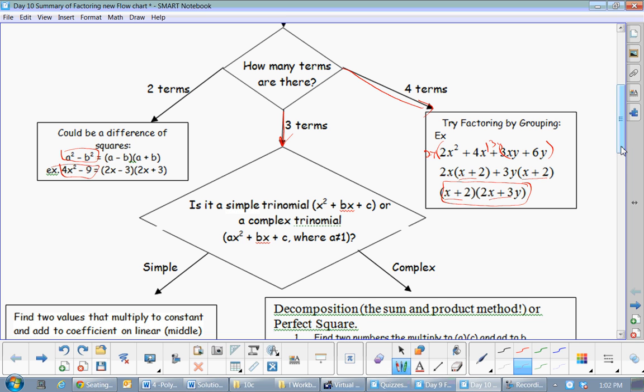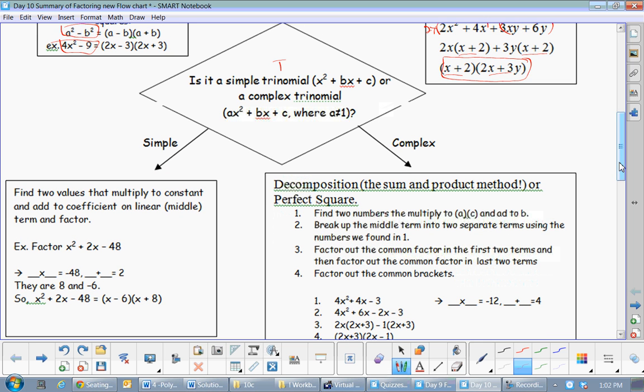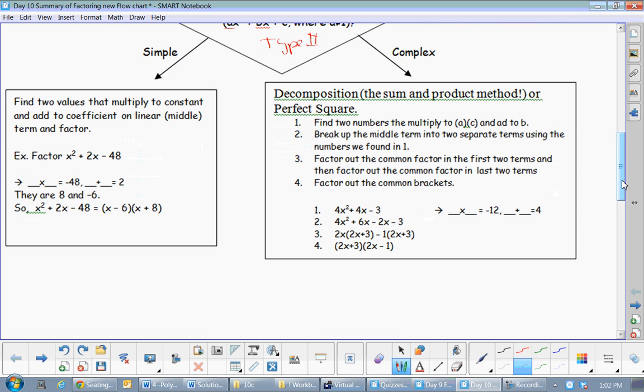Now, if it has three terms, it can either be a simple trinomial, which we called type 1, or it could be the kind with an A value, and that's type 2. Now, remember, if it's a type 1, those are the nice ones, right?